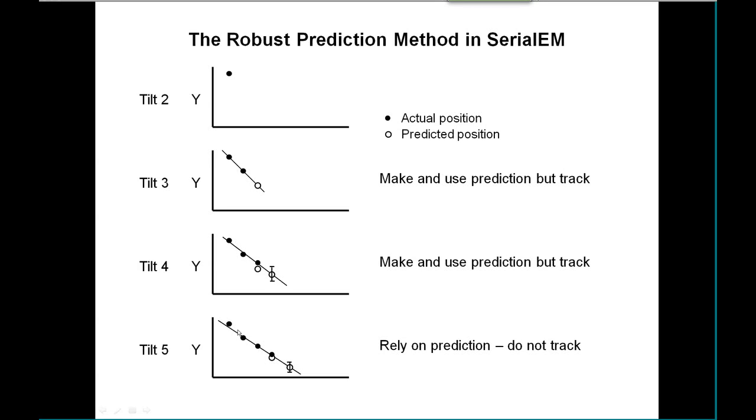Whereas when we get to the next tilt, we find that our last prediction was good enough and our standard error of prediction for this tilt is small enough. We find we can rely on the prediction and not have to track.